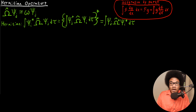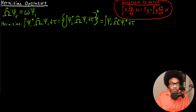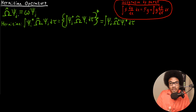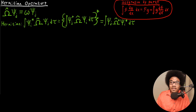In order to define Hermitian operators, we consider our general eigenvalue equation where we have an operator omega and a wave function psi sub j. I'm adding the subscript j just to be really general, but we're going to need that distinction because we're going to have wave functions of other states. On the right-hand side, we have our eigenvalue, the small omega, and psi sub j.